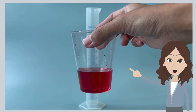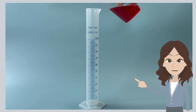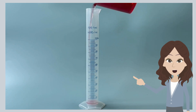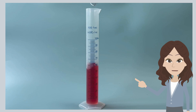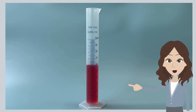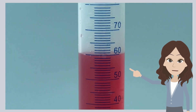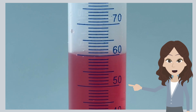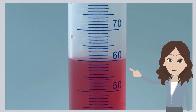Let's measure the volume of liquid in this cup. We can do this by pouring the liquid into the measuring cylinder carefully. Once we have poured all the liquid into the measuring cylinder, we can look at the reading more closely. What is the volume of the liquid? Pause and discuss with your friends.